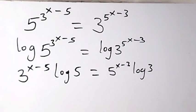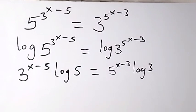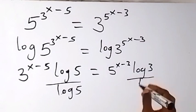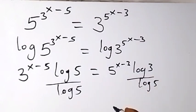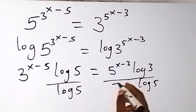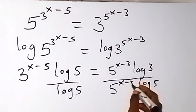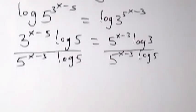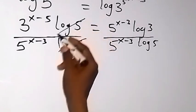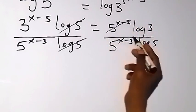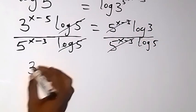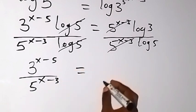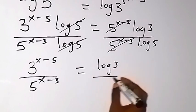So from there, we can separate the log on one side by dividing both sides by log 5, and also divide both sides by 5 raised to the power x minus 3. When we simplify, log 5 cancels log 5, and 5 raised to the power x minus 3 cancels each other. Then we have 3 raised to the power x minus 5, over 5 raised to the power x minus 3, equals log 3 over log 5.